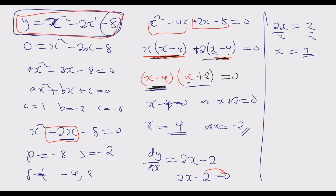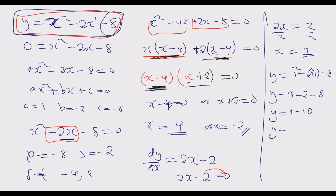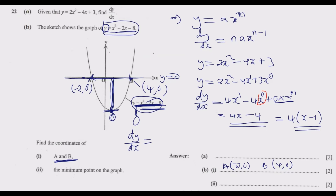Now we substitute x equals 1 into the original function to find y. y equals 1 squared minus 2 times 1 minus 8, which equals 1 minus 2 minus 8, giving y equals negative 9. Therefore the minimum turning point is (1, negative 9). That is our answer, and you can verify this on the graph.